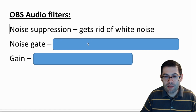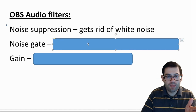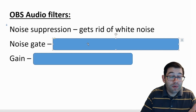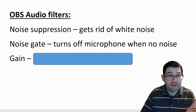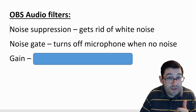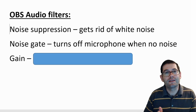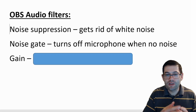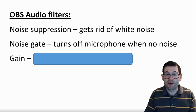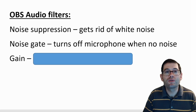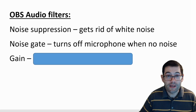The second filter you might think about is a noise gate. Just as a gate is open and shut, a noise gate opens or shuts the microphone — turns it on or turns it off when there is no noise. So if there's no noise, the microphone goes off. When there is noise, the microphone comes back on and starts recording. This is also another useful tool for removing white noise.